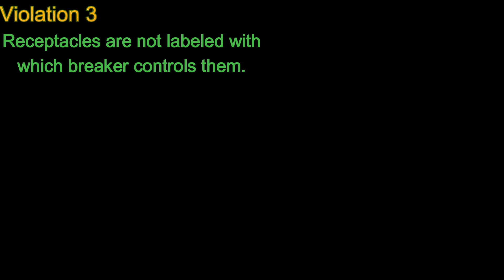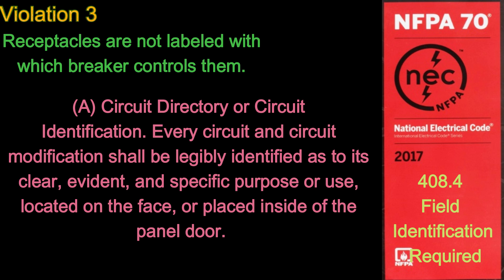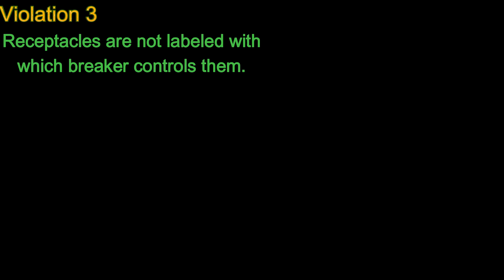Number 3: Receptacles are not labeled with which breaker controls them. Code NFPA 70 408.4, field identification required, states a circuit directory or circuit identification — every circuit and circuit modification shall be legibly identified as to its clear, evident, and specific purpose or use, located on the face or placed inside of the panel door. Solution: Use more permanent labeling and keep it current with changes due to remodeling.